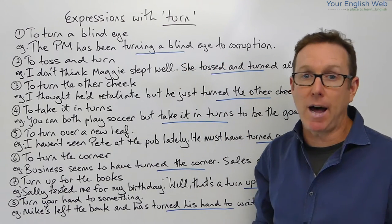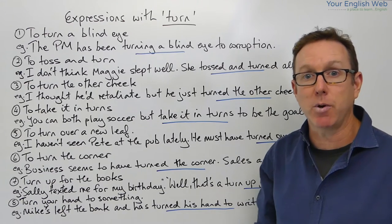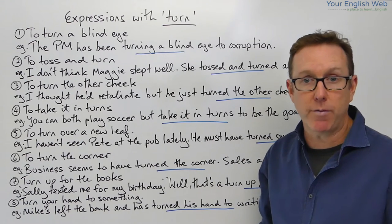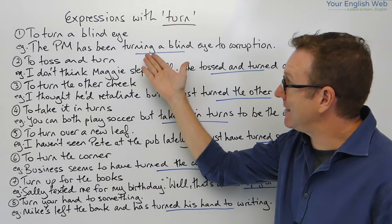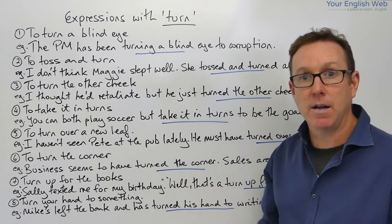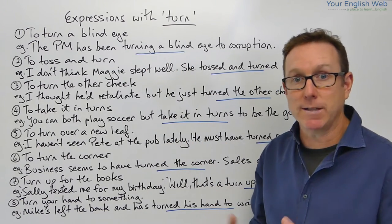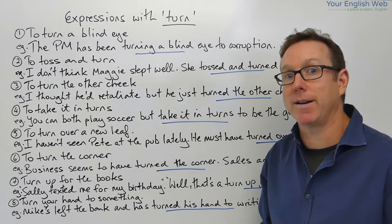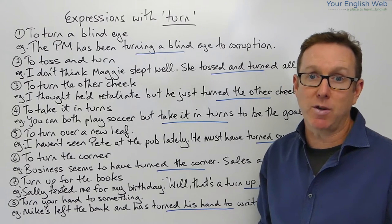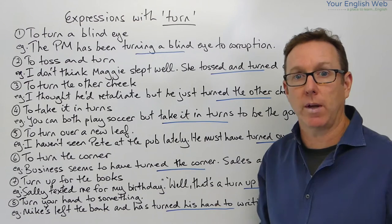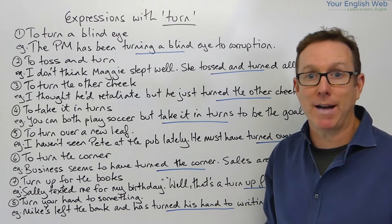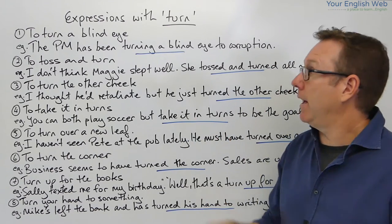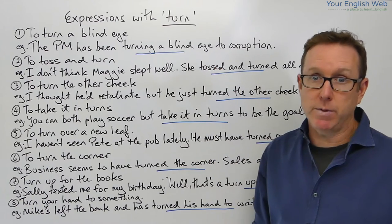If you turn a blind eye to something, it means that you deliberately ignore it. You know that it's happening but you choose, for whatever reason, to ignore it. In this example, the Prime Minister knows there's a problem with corruption in his party, but he's turned a blind eye — pretending that it doesn't exist. Some of the other people in his party are corrupt, but he's ignored the reality.